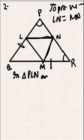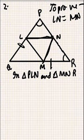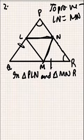That is triangle PLN and triangle MNR. We need to prove these triangles congruent so that we can prove LN equals MN by CPCT. So first of all, let's see the conditions. We know that PQ is equal to QR.